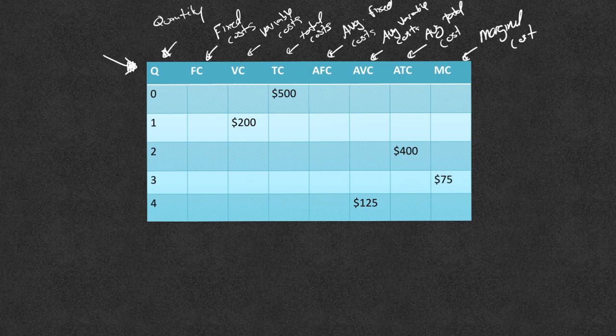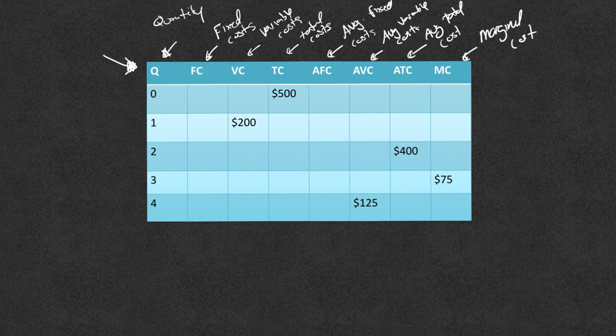And ATC is average total cost leaving us with MC being marginal cost. So if you need to make flashcards that show you what the abbreviations are for each one of these that's not a bad idea. Let's make sure we know all of the equations for all of these. I'll put these over here on the right.